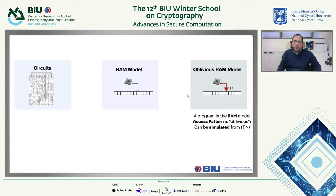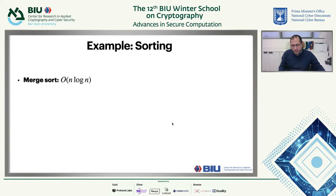This brings us to introduce another model of computation called the Oblivious RAM model. By oblivious, I mean that the access pattern can be simulated — it doesn't leak any information about what the program actually accesses. We can simulate the access pattern from only the total steps the program makes and the size of the memory.